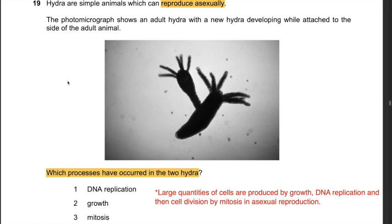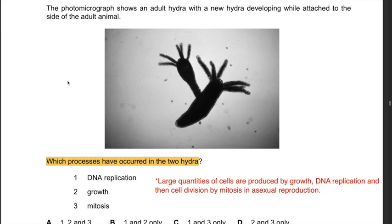Question 19: Hydra can reproduce asexually, with a new hydra developing while attached to the adult. Which processes have occurred? Large quantities of cells are produced by growth, DNA replication, and cell division by mitosis during asexual reproduction. All three processes occur. Hence the answer is A: 1, 2, and 3.